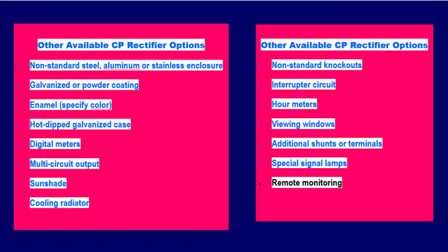Further CP rectifier options include: multi-circuit output, sun shade, cooling radiator, non-standard knockouts, interrupter circuit, hour meters, viewing windows, additional shunts or terminals, special signal lamps, and remote monitoring.